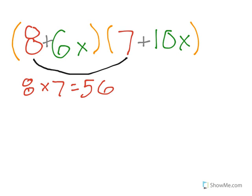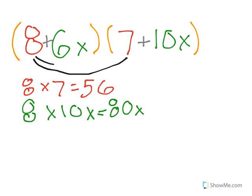Next, the letter O in FOIL stands for outside. So you multiply the two outside variables, which in this case would be 8 and 10x, which equals 80x. So those are these two.